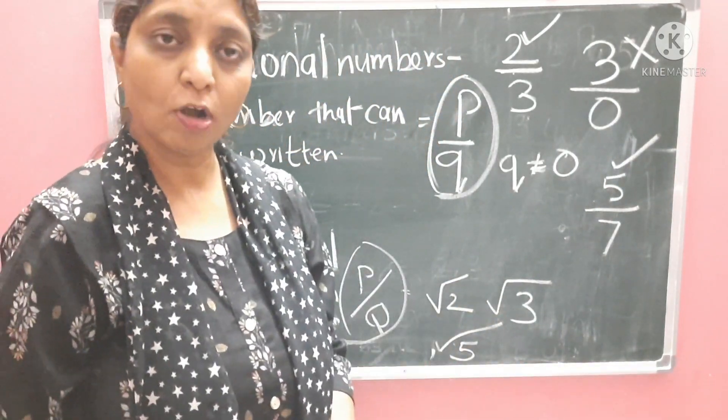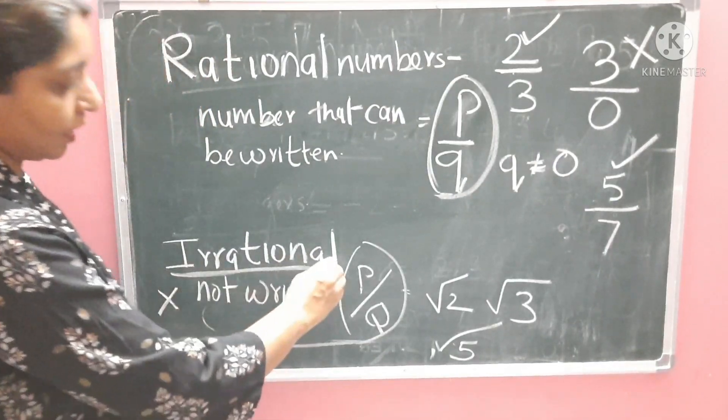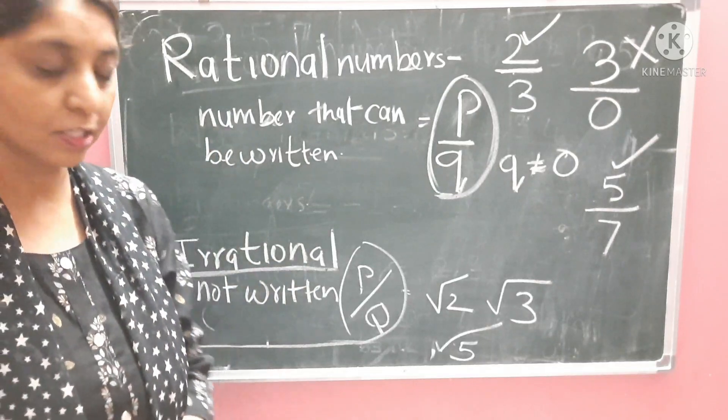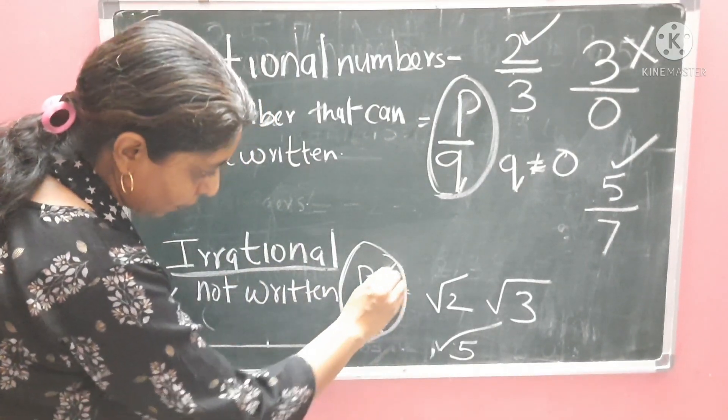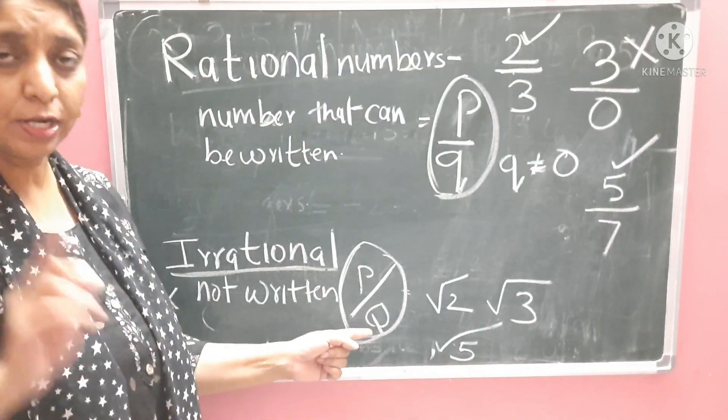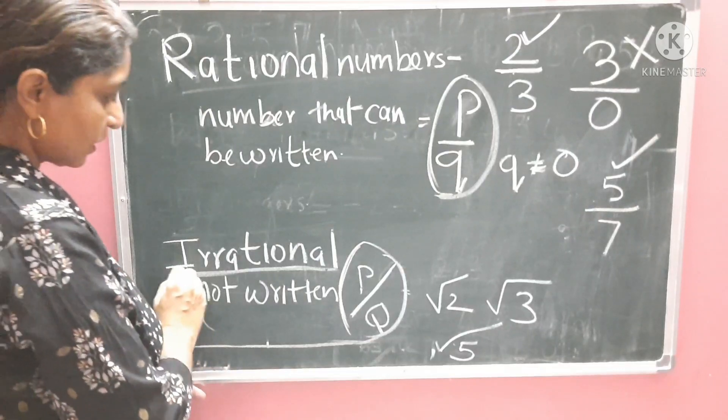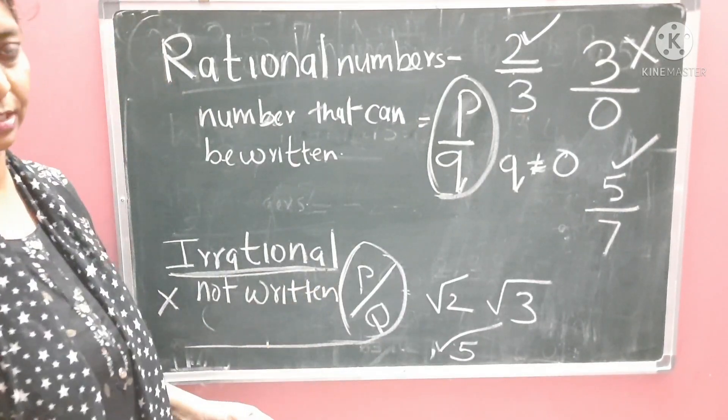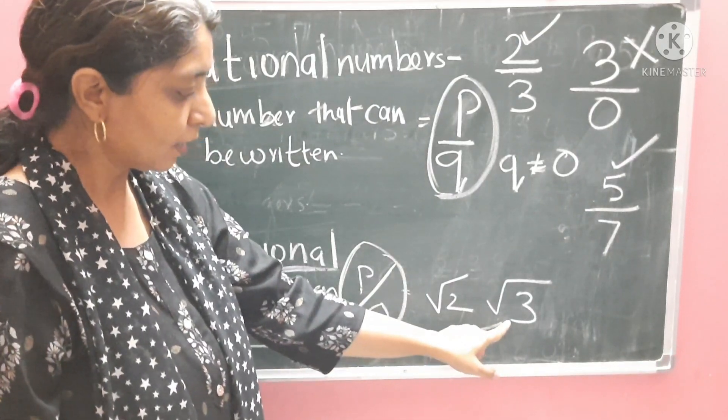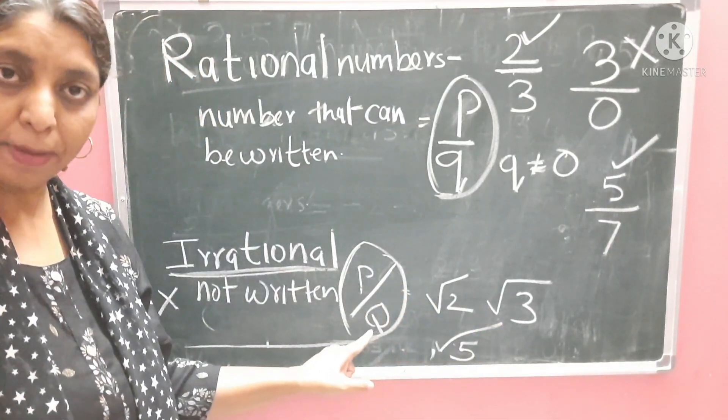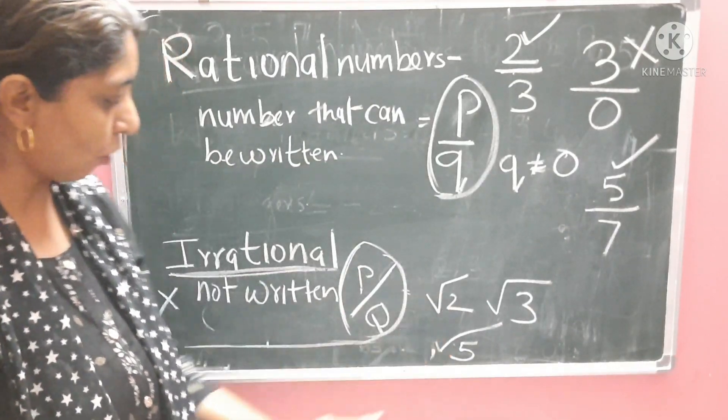Now, we will see what are irrational numbers. Irrational numbers are those numbers which are not written in the form of P upon Q. Numbers that cannot be written in this form are called irrational numbers. Like square root of 2, square root of 3. These are not in P upon Q form.